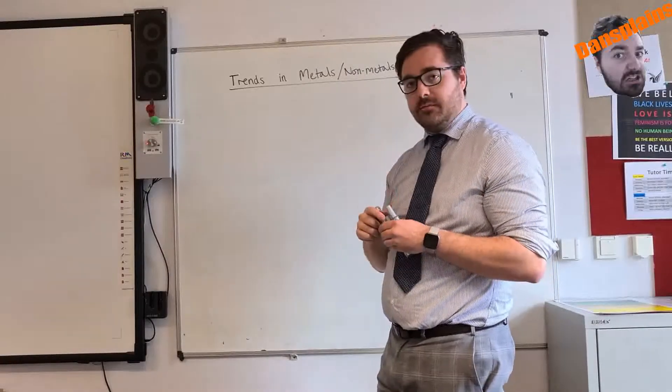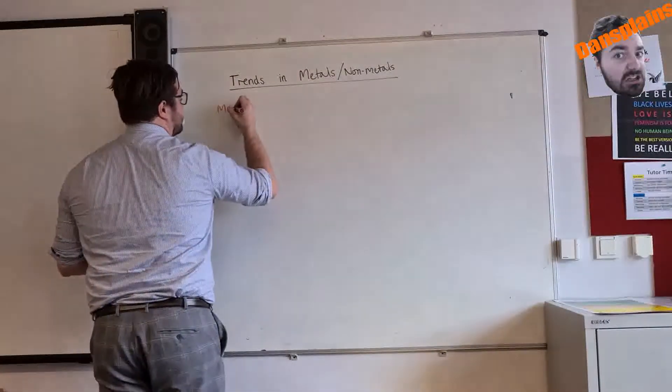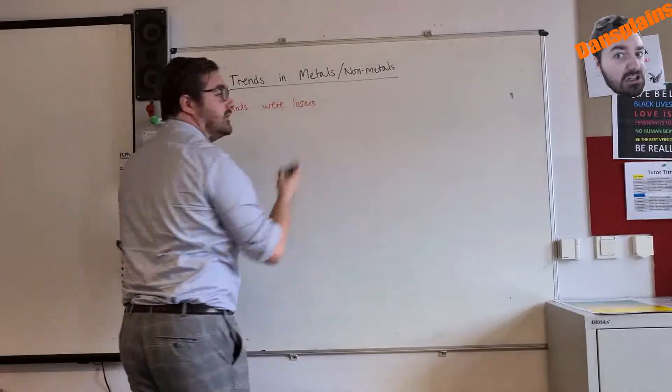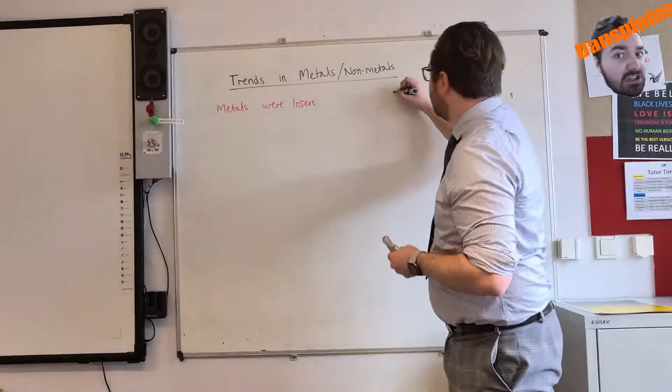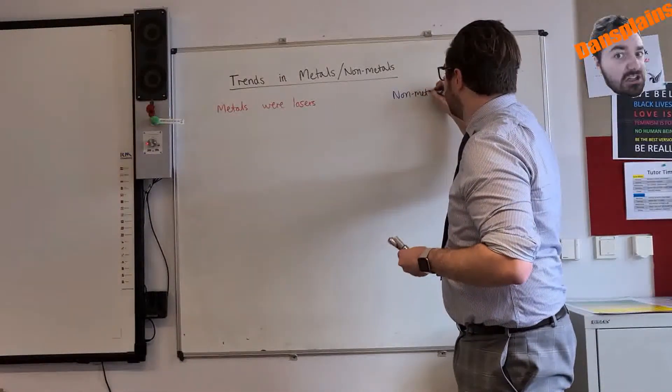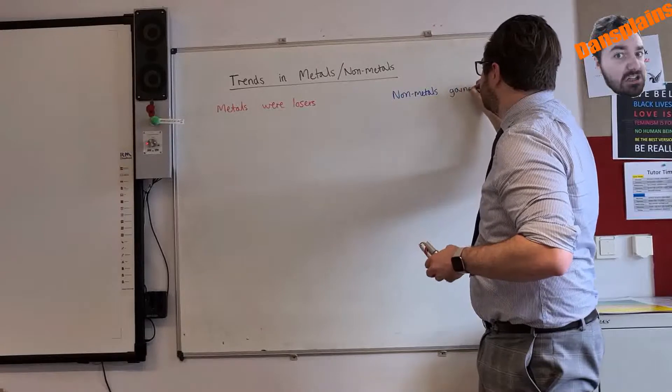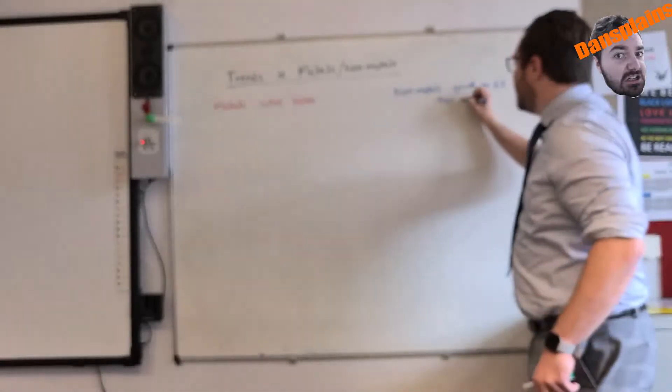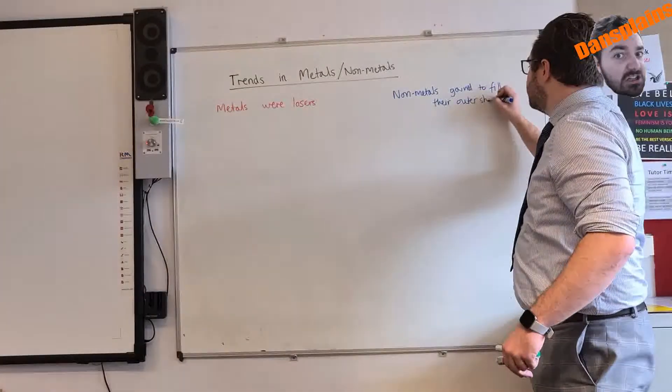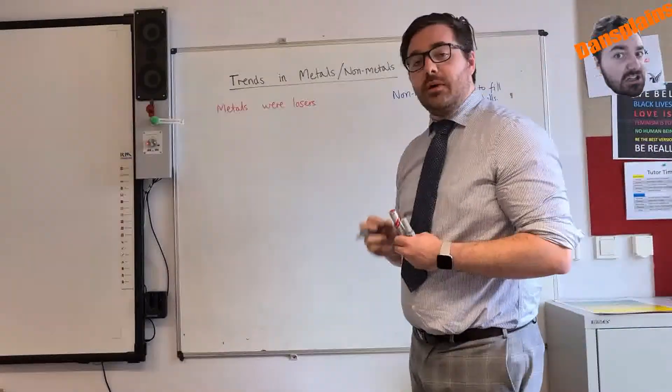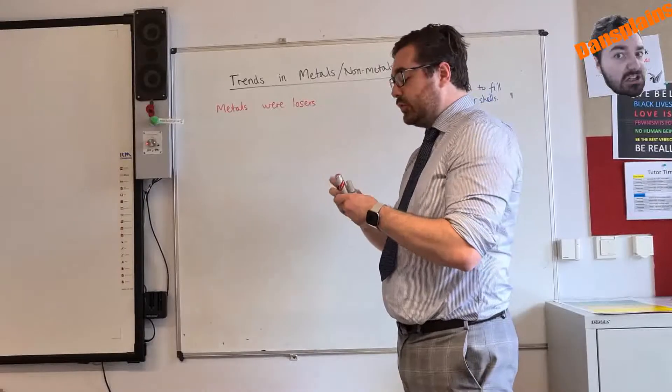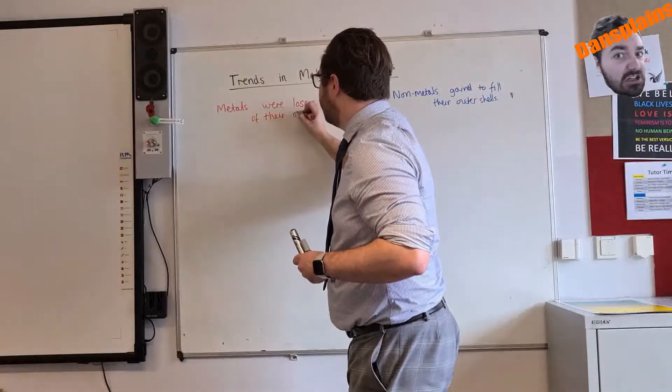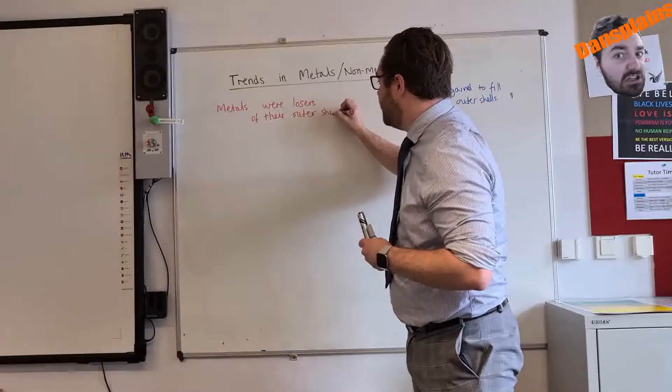Previously, when we were doing ionic structure, we did that metals were losers, as in they lose their outer shell, and nonmetals gained to fill outer shells. Now, largely, all interactions with metals and nonmetals are exactly the same. Metals will lose their outer shell or their outer shells, and nonmetals will gain to fill their outer shells.